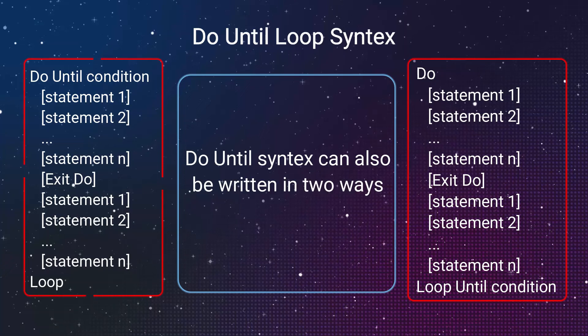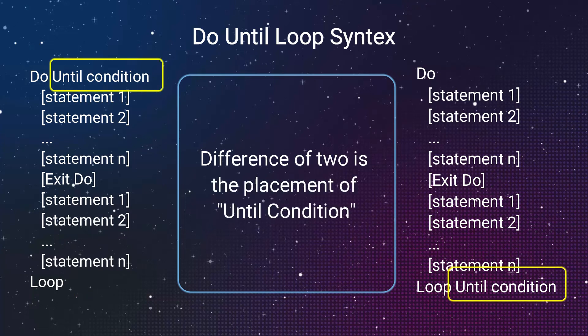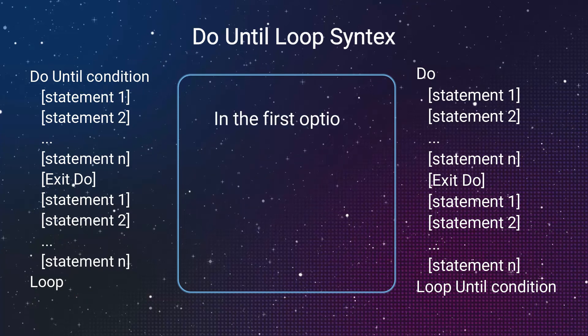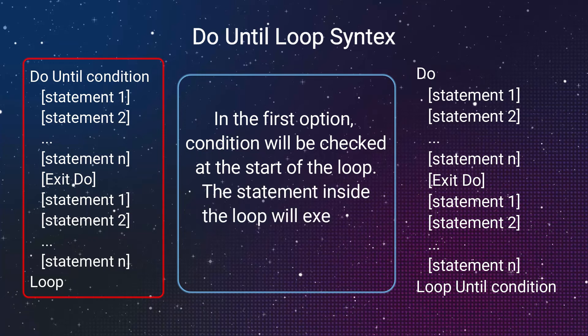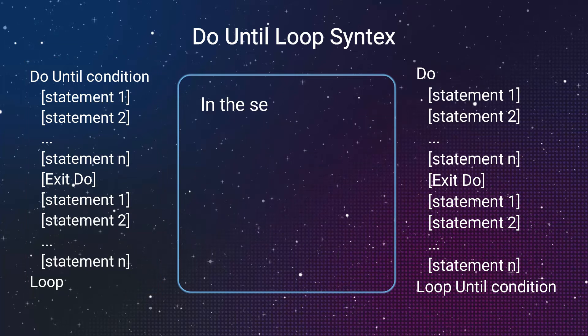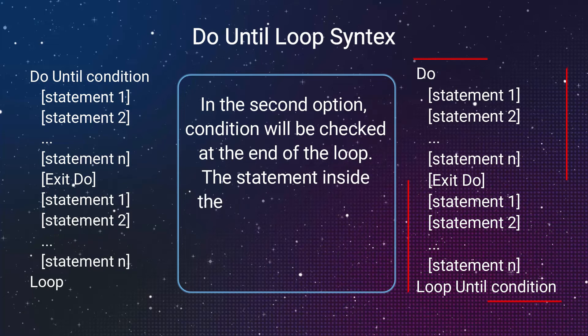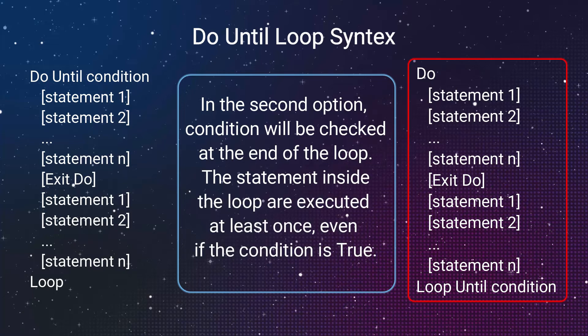Do Until syntax can also be written in two ways, like Do While loop. Difference of two is the placement of Until condition. In the first option, condition will be checked at the start of the loop. The statement inside the loop will execute if the condition is false. In the second option, condition will be checked at the end of the loop. The statements inside the loop are executed at least once, even if the condition is true.